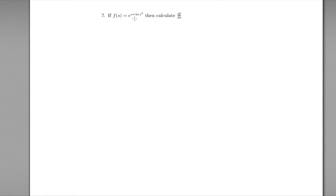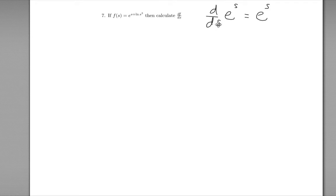Because it's a function e to the power of something, we might be inclined to use the formula: the derivative with respect to s of e to the power of s is just e to the power of s. However, this formula is only good when the exponent matches exactly what you're taking the derivative with respect to. Here the exponent is s and we're taking the derivative with respect to s, so this formula would be totally fine.